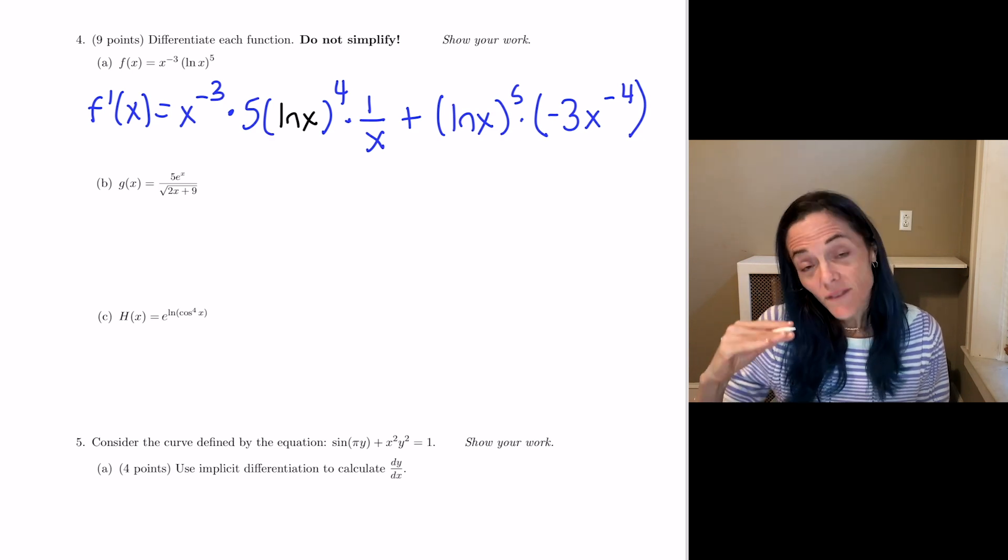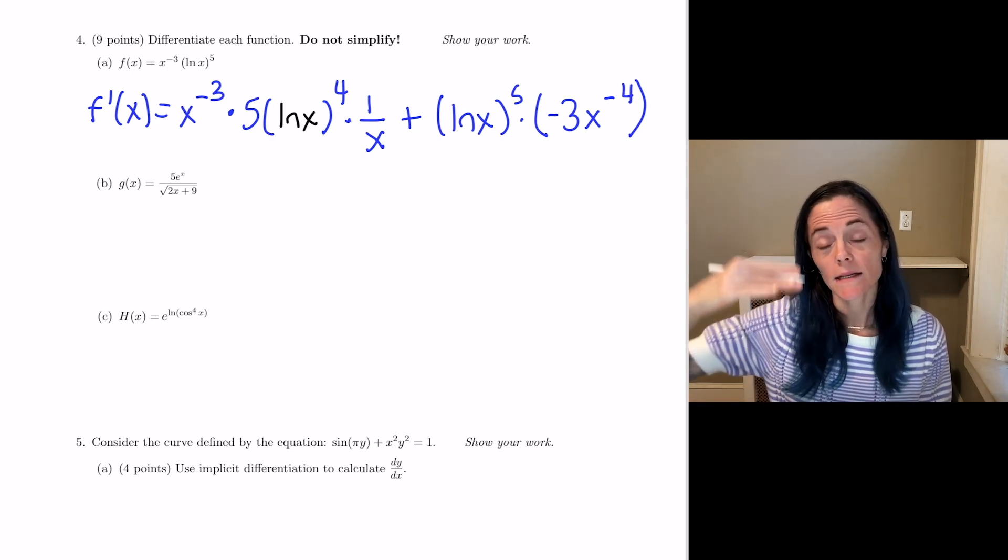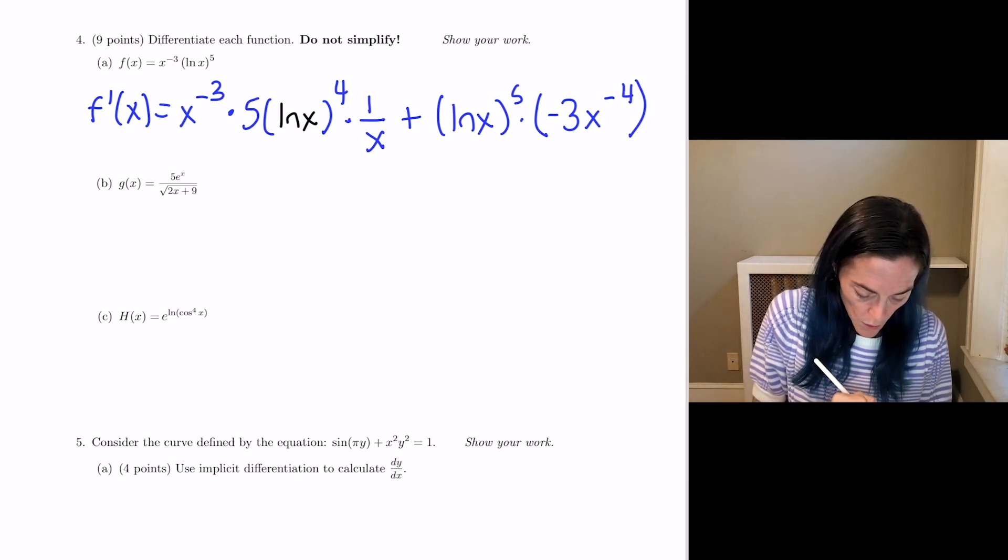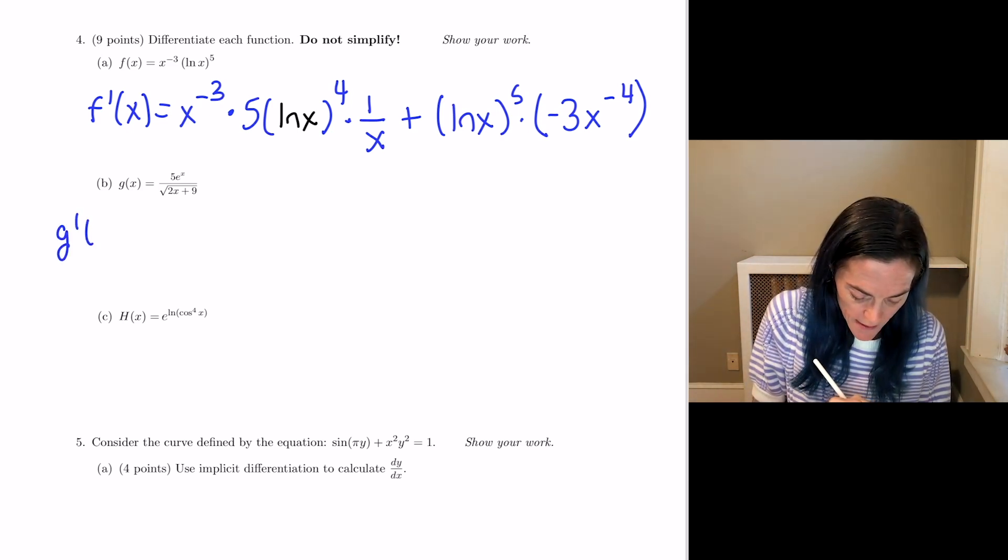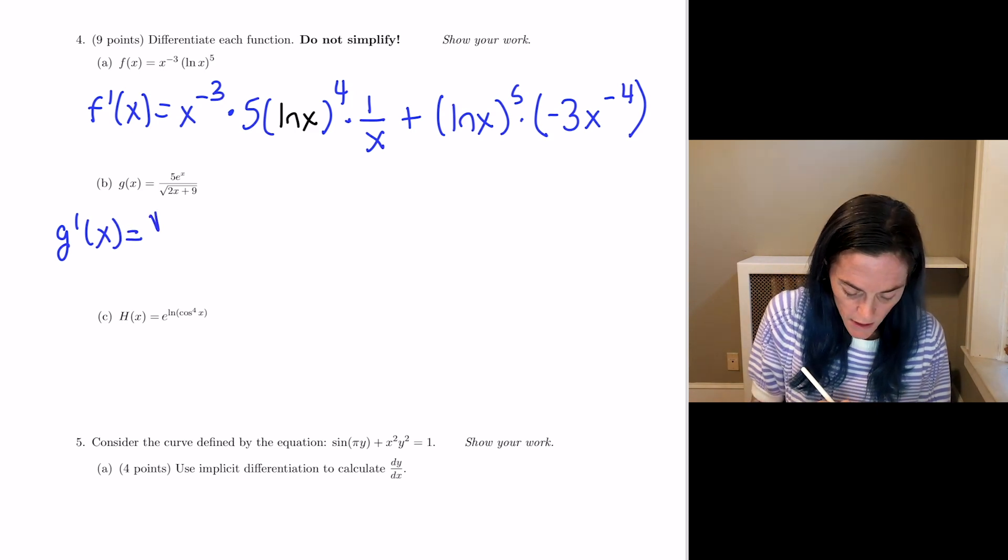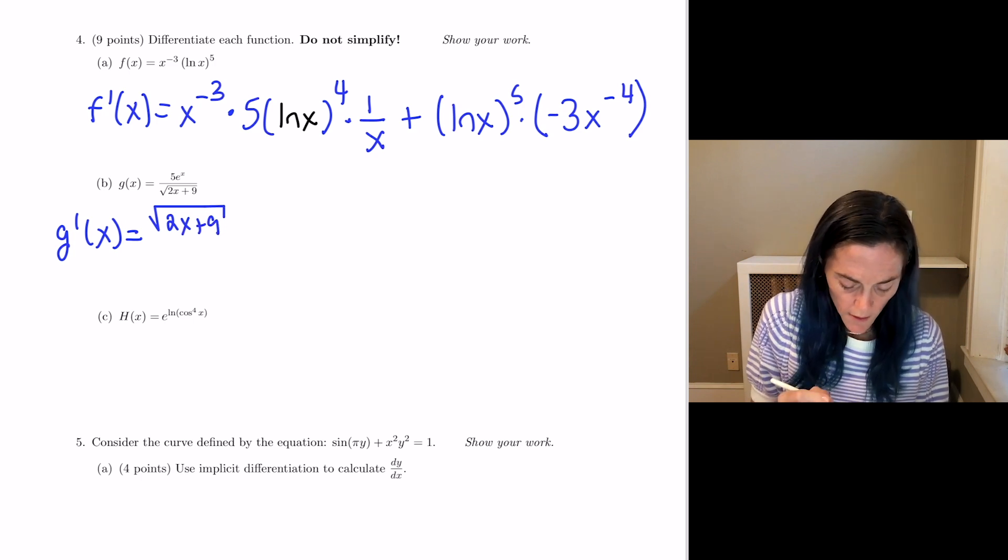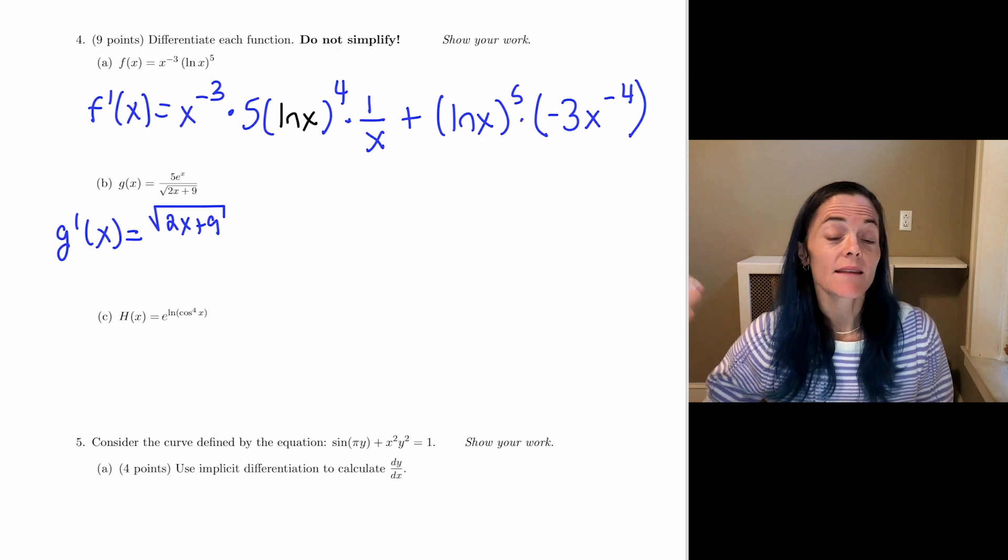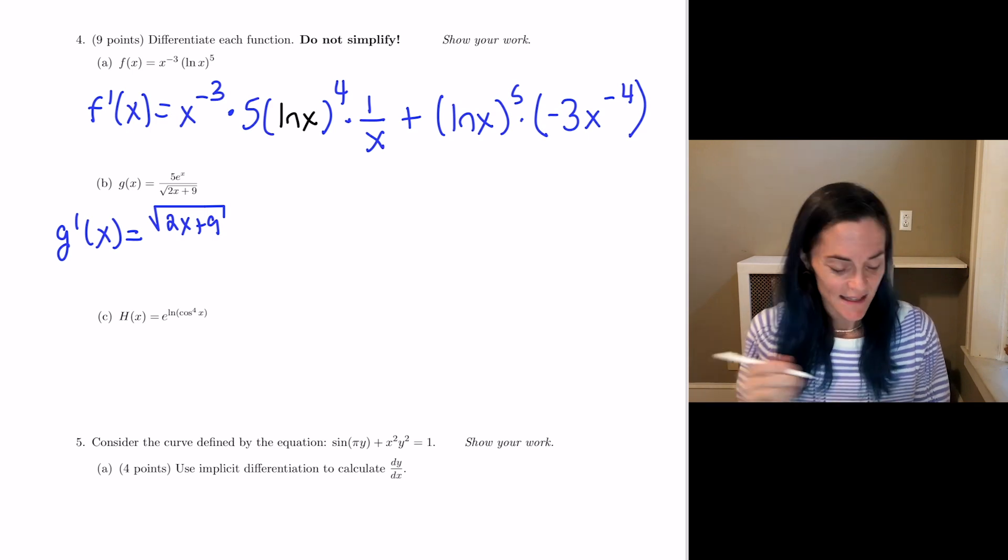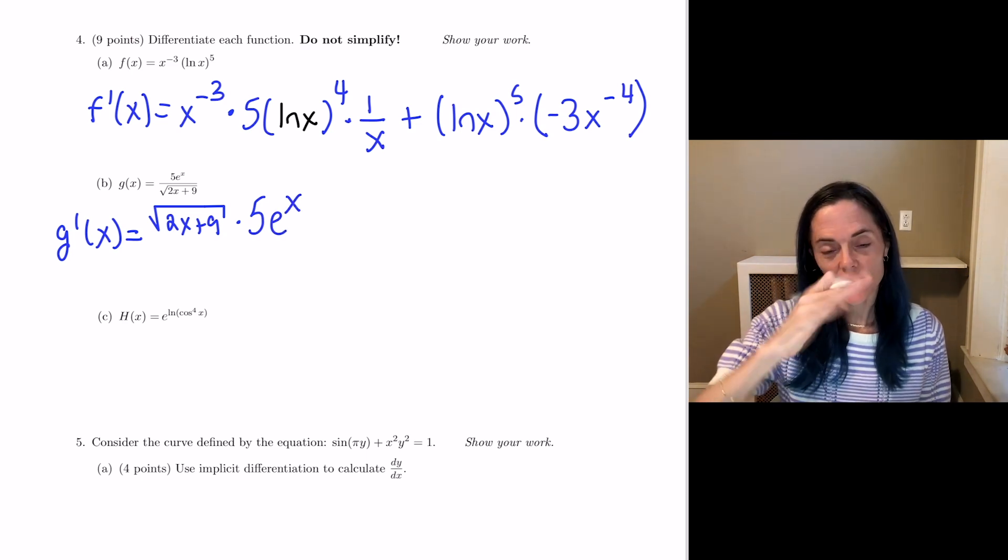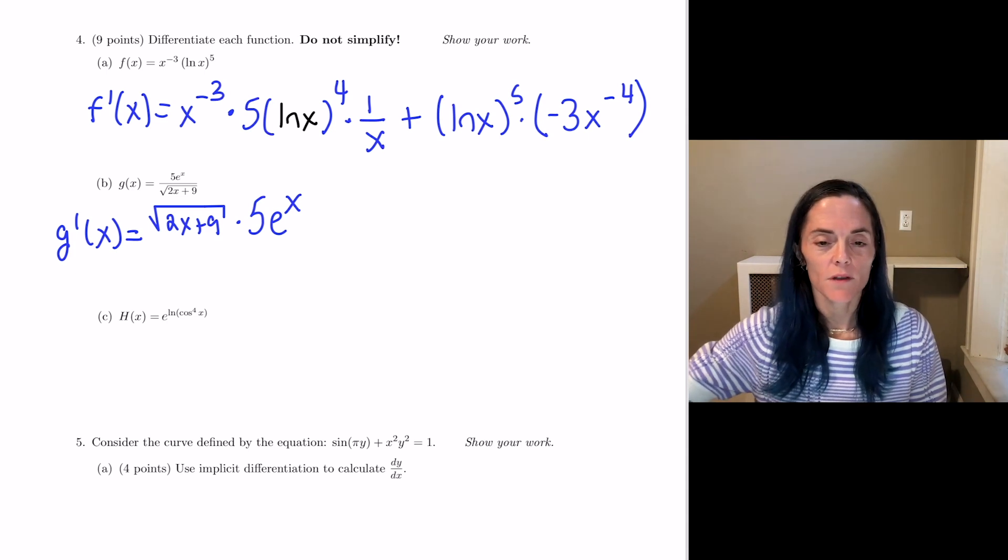Next one, g of x. Fundamentally, I see one function divided by another. This will be quotient rule. Okay, g prime of x. We have denominator, which is the square root, two x plus nine times derivative of the numerator. Well, the derivative of e to the x is e to the x. Therefore, the derivative of five e to the x is five e to the x. Very nice. We have denominator, derivative of the numerator.